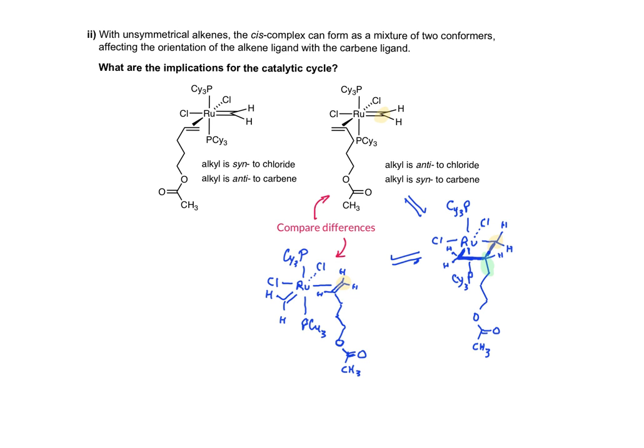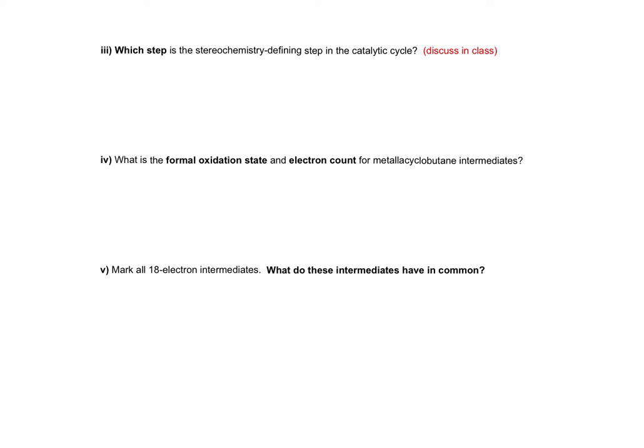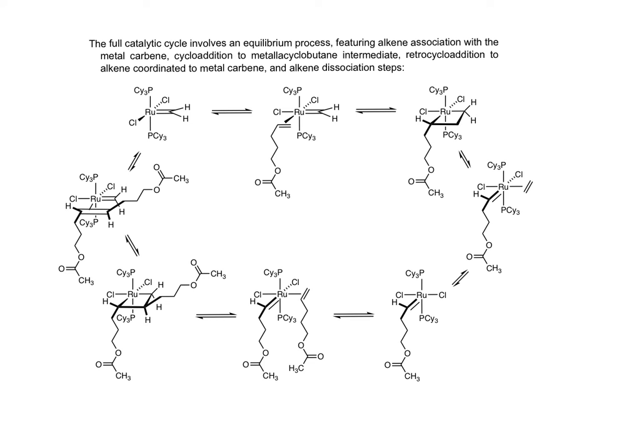For the questions at the bottom of page 4, which we will discuss in class, which step is the stereochemistry-defining step, the formal oxidation state, and electron count for metallocyclobutanes, and the 18 electron intermediates, it's worth looking back at the catalytic cycle. Think about which step is the stereochemistry-defining step in this catalytic cycle. Determine the formal oxidation state and the electron count for one of the metallocyclobutane intermediates. And mark or check all of the 18 electron intermediates in the catalytic cycle, and describe what these intermediates have in common. This concludes the video on the catalytic cycle for alkene metathesis.